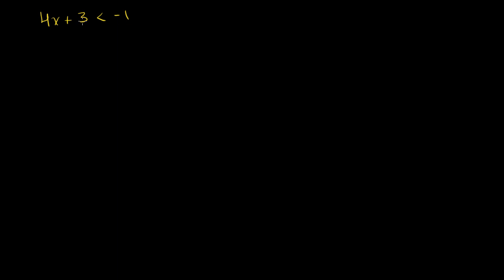The first thing I'd like to do is get rid of this 3. So let's subtract 3 from both sides of this equation. The left-hand side is just going to end up being 4x — these 3's cancel out. There's no reason to change the inequality just yet; we're just subtracting the same value from both sides. We have negative 1 minus 3, which is negative 4.